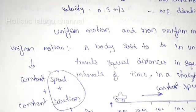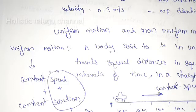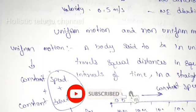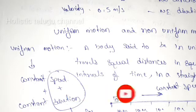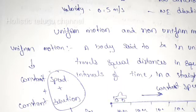So in uniform motion, we have constant speed and constant direction. In speed, but in direction, there are plenty of changes. So the body is traveling at constant velocity. The uniform motion means that it is constant velocity.